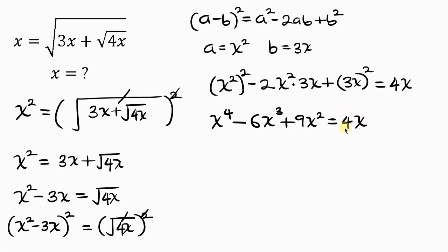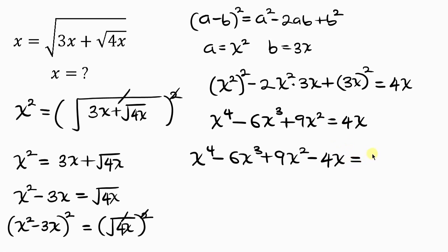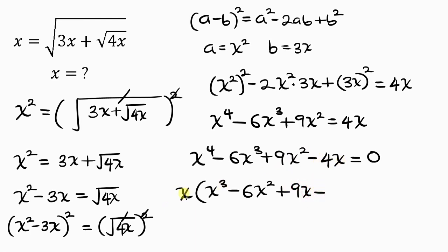Our next step is to move 4x to the left hand side, so as 4x crosses it becomes minus 4x, giving x to the fourth minus 6x cubed plus 9x squared minus 4x equals 0. Notice that x is common to all terms, so we can factor out x: x times (x cubed minus 6x squared plus 9x minus 4) equals 0.